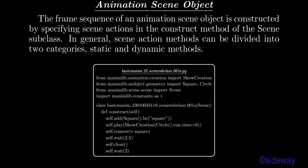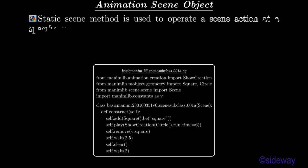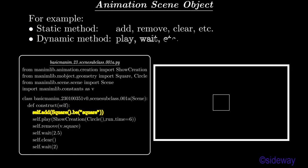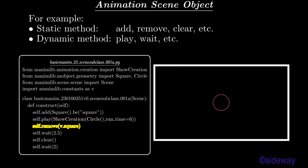The frame sequence of an animation scene object is constructed by specifying scene actions in the construct method of the scene subclass. In general, scene action methods can be divided into two categories: static and dynamic methods. A static scene method is used to operate a scene action at a specific point in time, while a dynamic scene method is used to operate a scene action over a period of time. For example, static methods include add, remove, clear, etc.; dynamic methods include play, wait, etc.